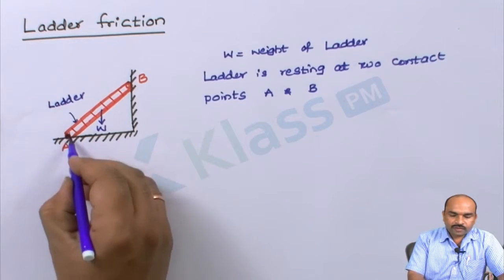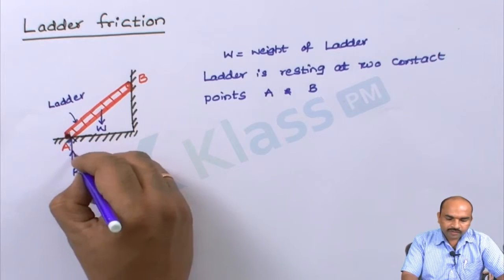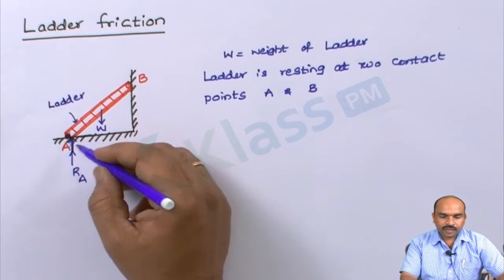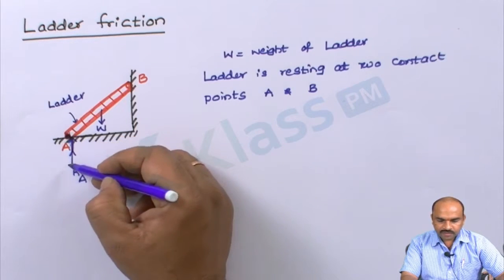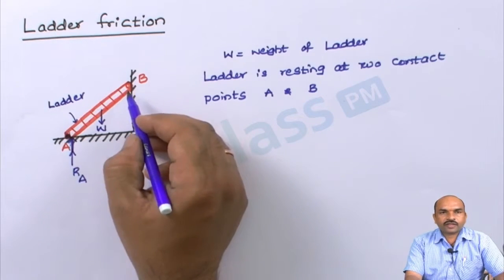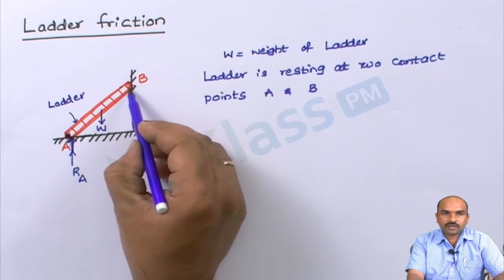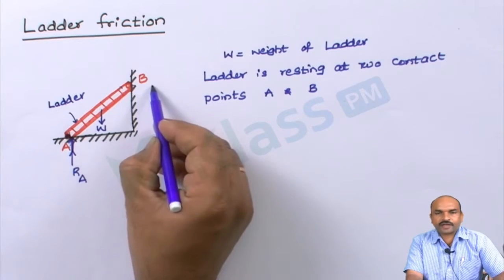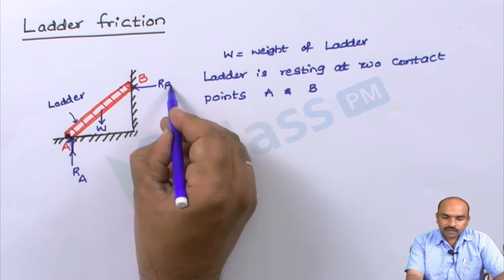There will be a reaction Ra in the upward direction — a reaction at point A in the vertical upward direction, because there is a force acting in the downward direction. Similarly, there will be a reaction at point B also. This ladder is pushing the wall in this direction, applying force on the wall. So there will be a reaction at B in the opposite direction.